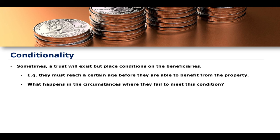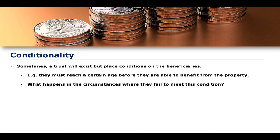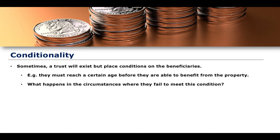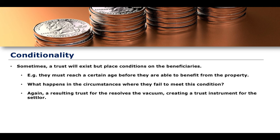What happens in circumstances where the beneficiary fails to meet this condition? If a trust is set up building in property over many years for a newborn child, with the requirement that they reach the age of 18, but tragically they never make it to 18 — what if they die before their 18th birthday? In that circumstance, you again have a vacuum: a trust has been created but there is no ability for the beneficiary to benefit, as they have not met the condition. A resulting trust then resolves this vacuum, creating a trust instrument for the settlor.